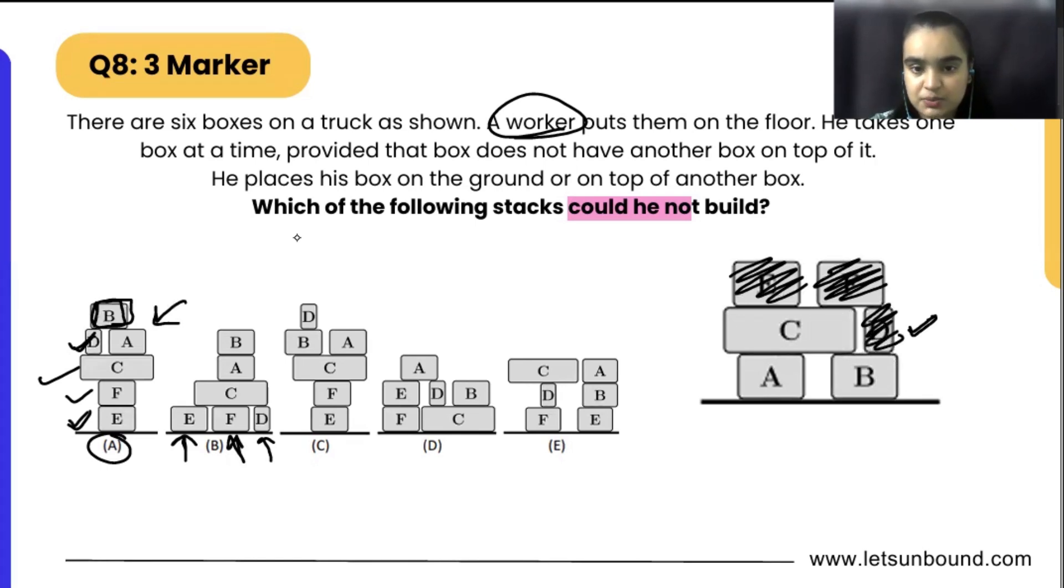Now if we see option number C, E, F, C - those three are similar to option A. We saw how we can place it, that's correct. Then we can have A on it - that is also correct.